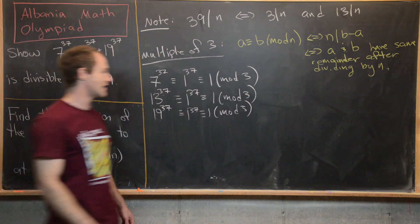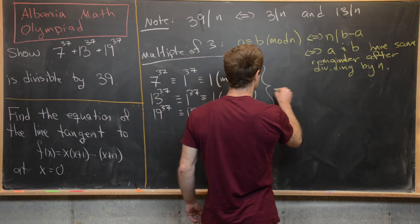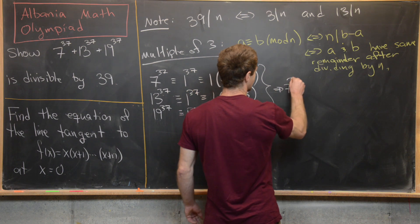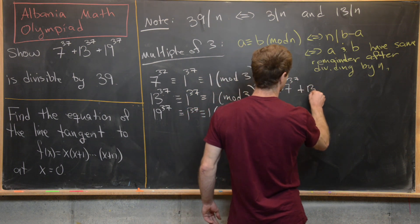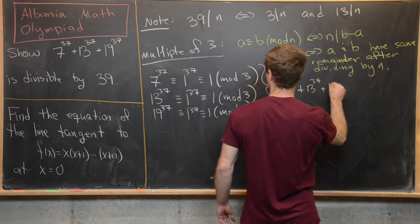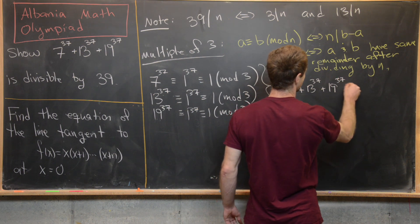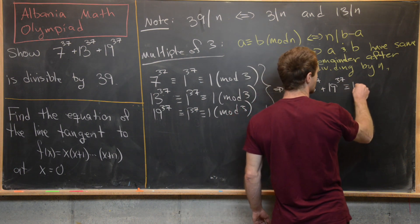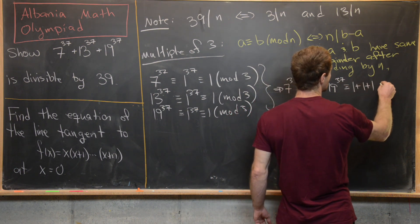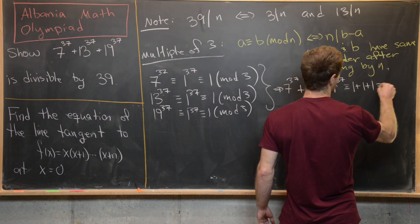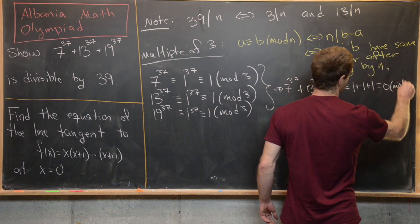But now putting these together, we see that 7^37 + 13^37 + 19^37 is going to be congruent to 1 + 1 + 1, which is congruent to 0 mod 3.